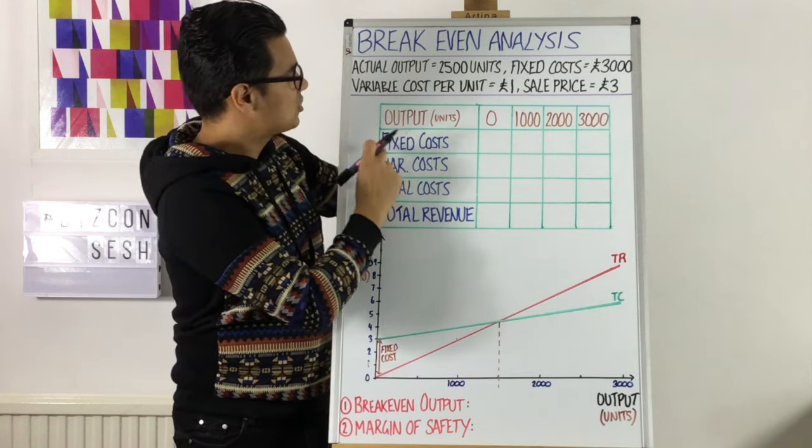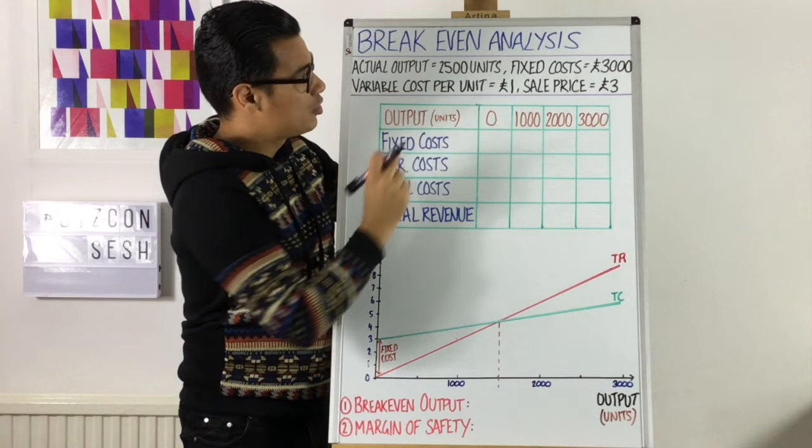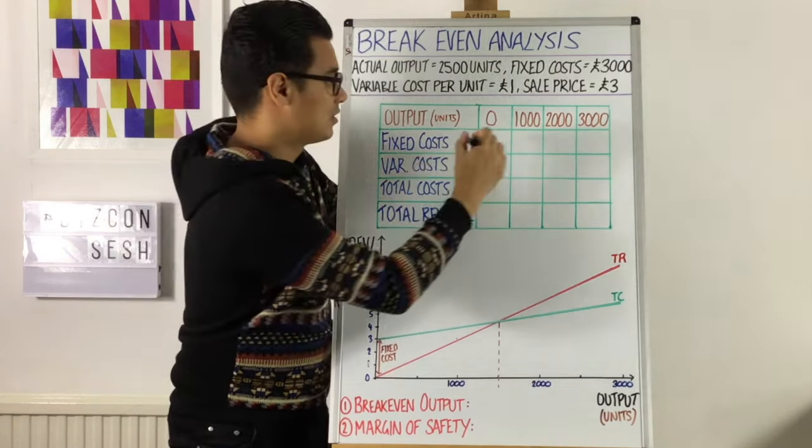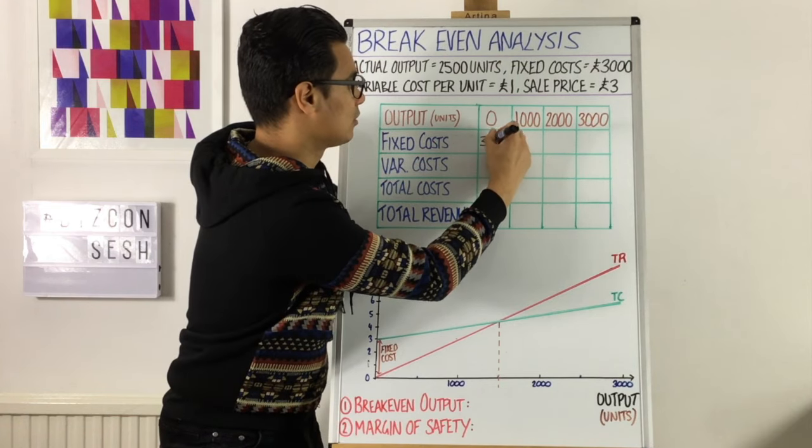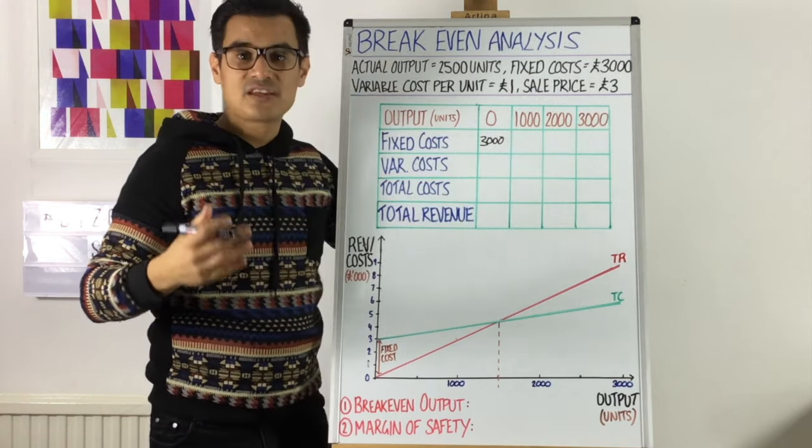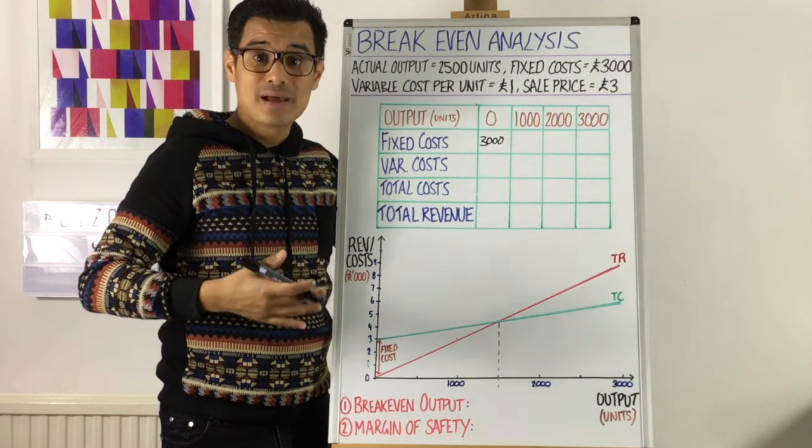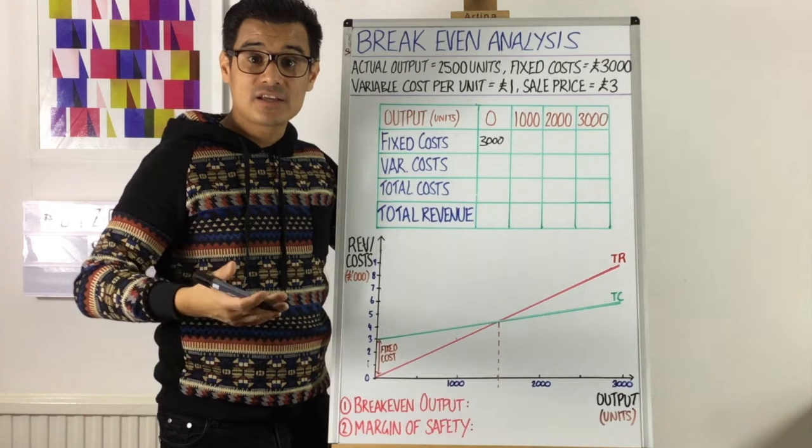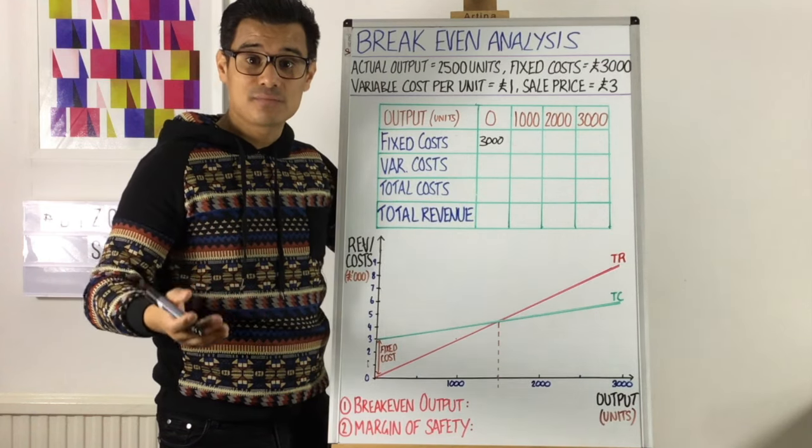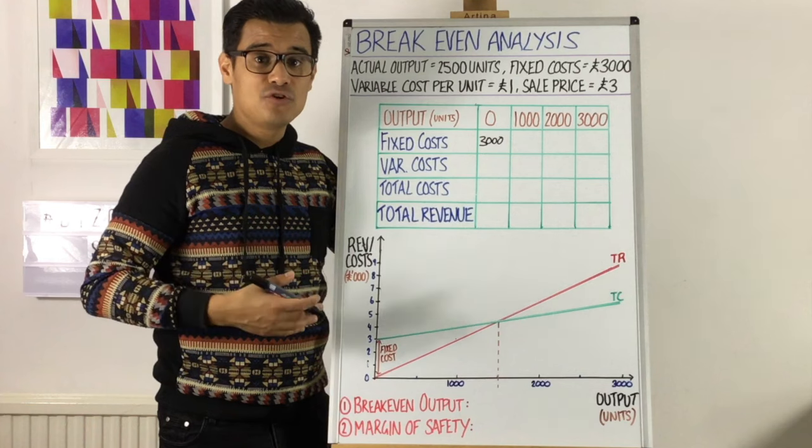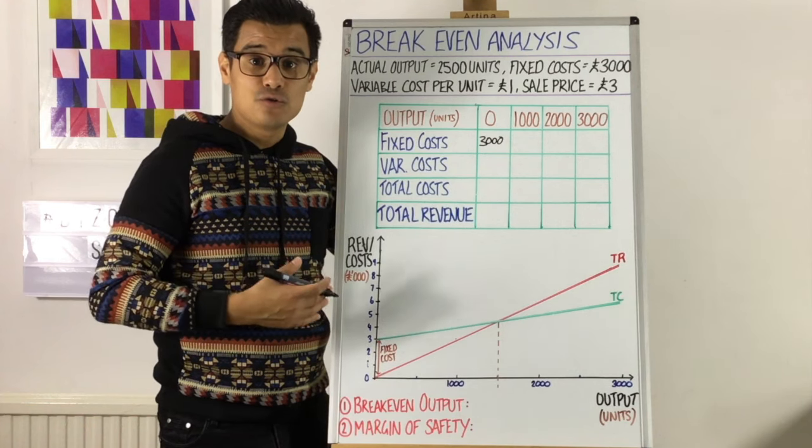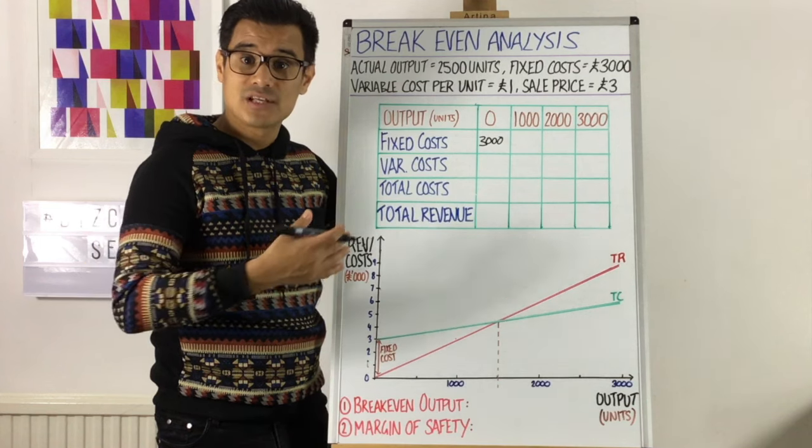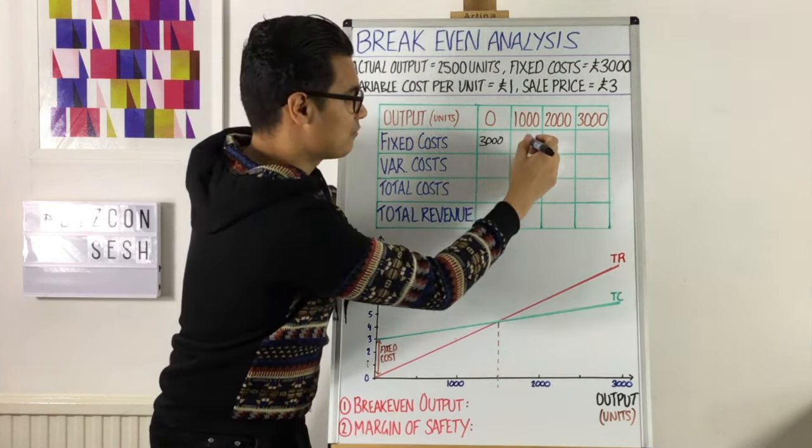So fixed costs. If you make zero units, then the fixed costs will be £3,000. Because fixed costs do not vary with output, it doesn't matter how many things, how many units you make, the fixed costs will still be £3,000. Imagine that fixed cost was your rent. Whether you make zero things or you make 3,000 things, you still pay the same amount of rent.